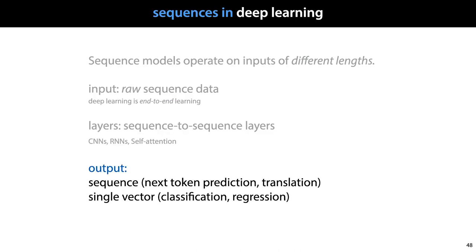The convolution layer is hopefully enough to give you a concrete idea of what a sequence-to-sequence layer might look like. In the next video, we'll see another way of building sequence-to-sequence layers. For now, we'll move on to the output.